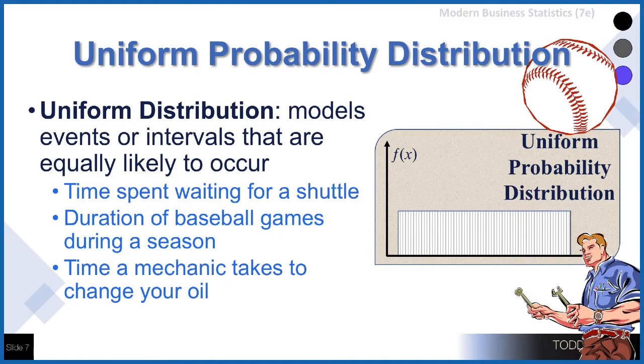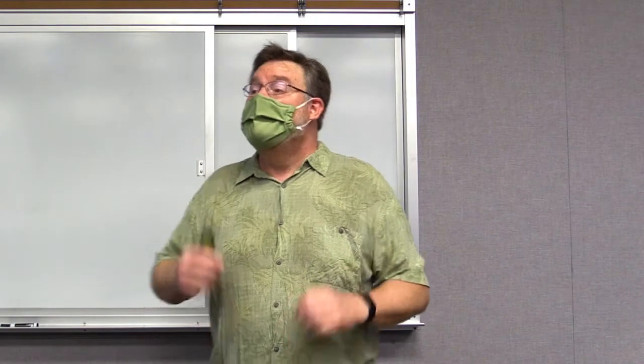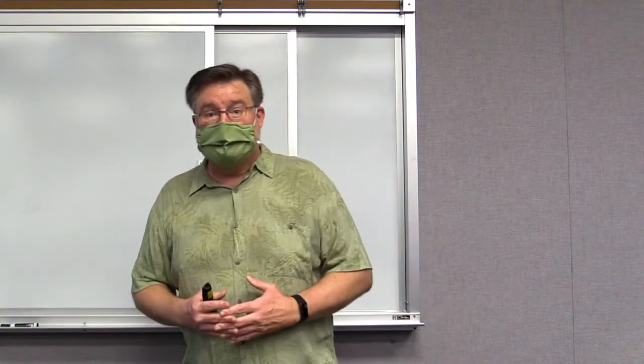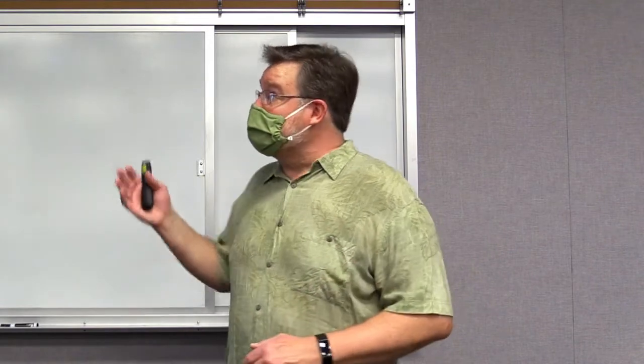Or the time that it takes for a mechanic to change your oil. We know it will be greater than zero, but we could start with a minimum and a maximum value. It will be any time within that interval. When the random variable can take on any value within the interval, that is where we're going to use a uniform probability distribution.